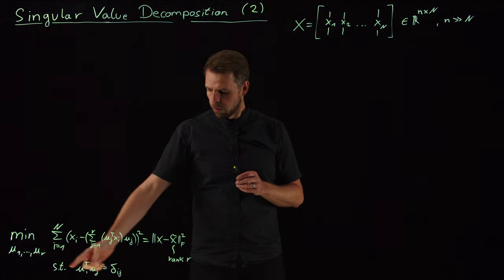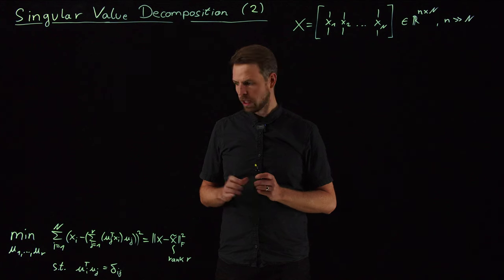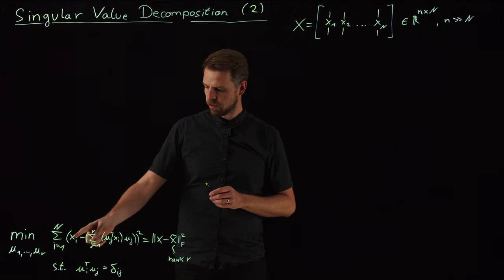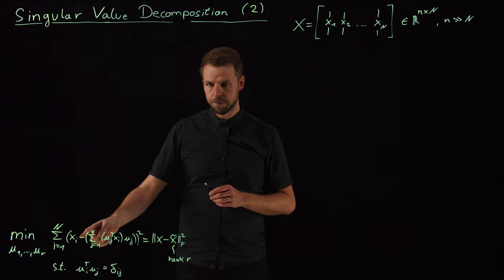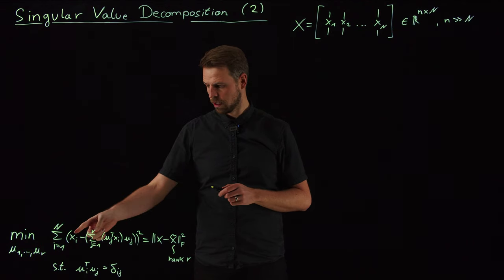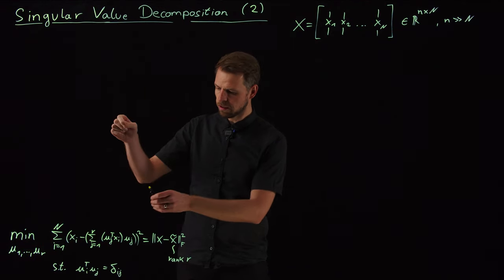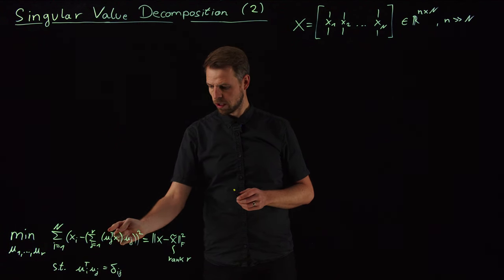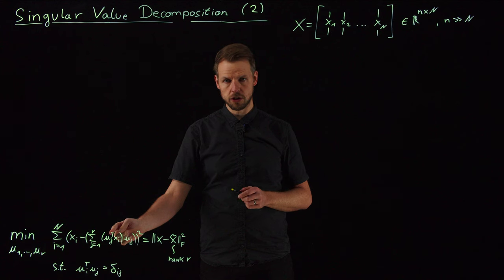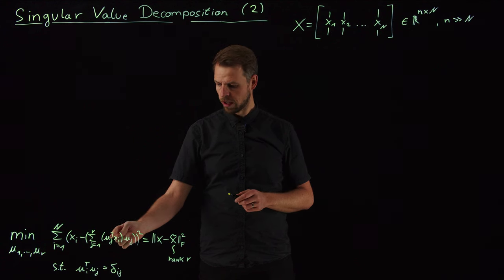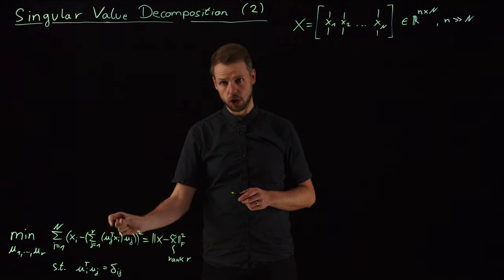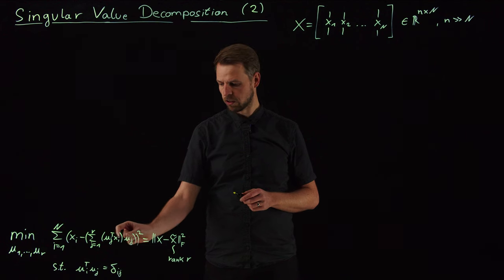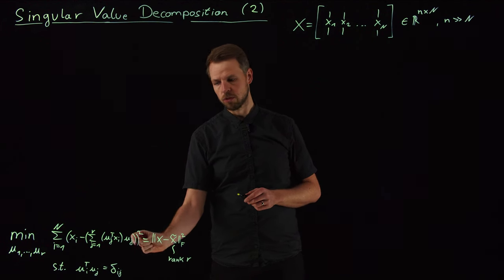And we came up with this optimization problem. If you look at it once more, we see that we have a data point Xi that may be high dimensional, it's in n dimensions. And what we want to do is we want to project this onto a set of R basis functions. So this is uj times Xi giving me the coefficient in terms of the jth basis vector and then expand it in terms of this basis vector.